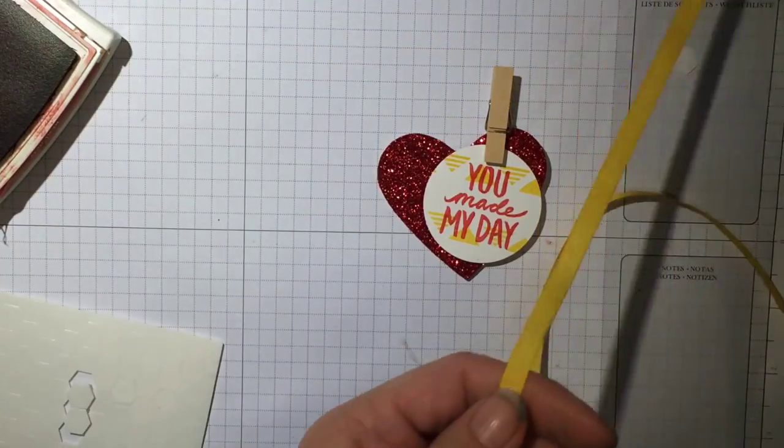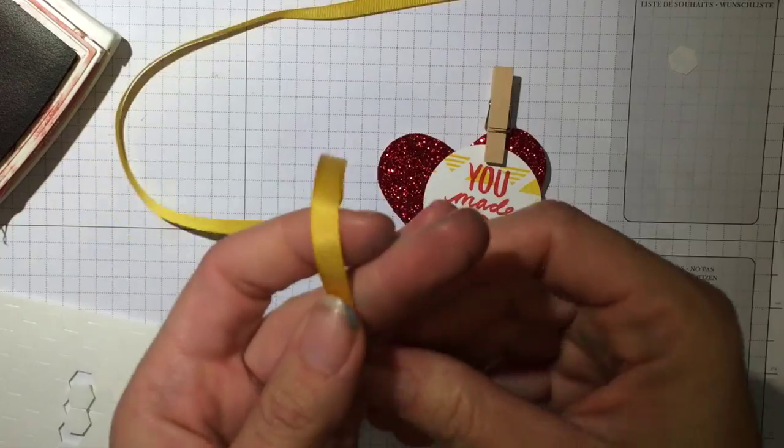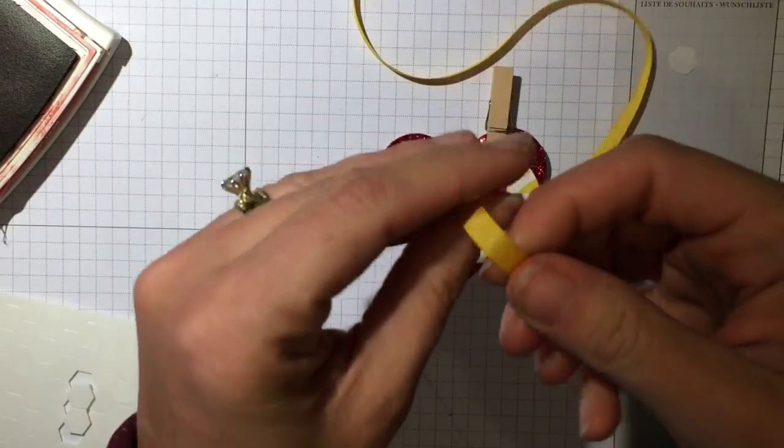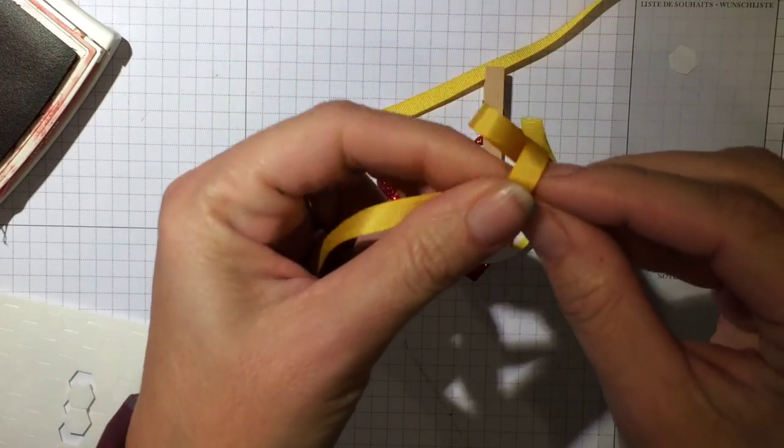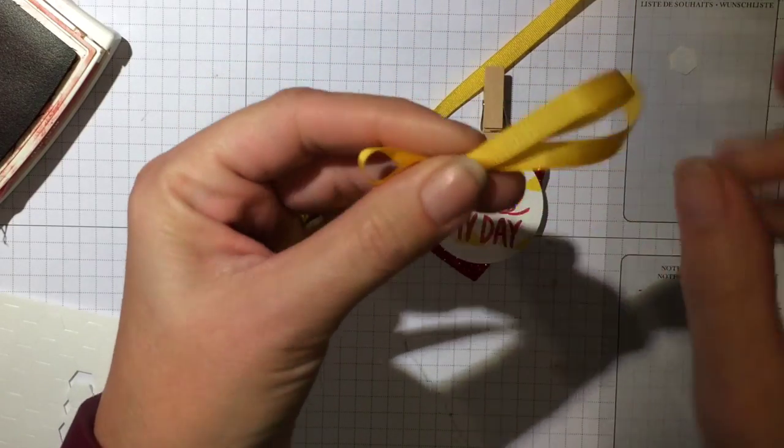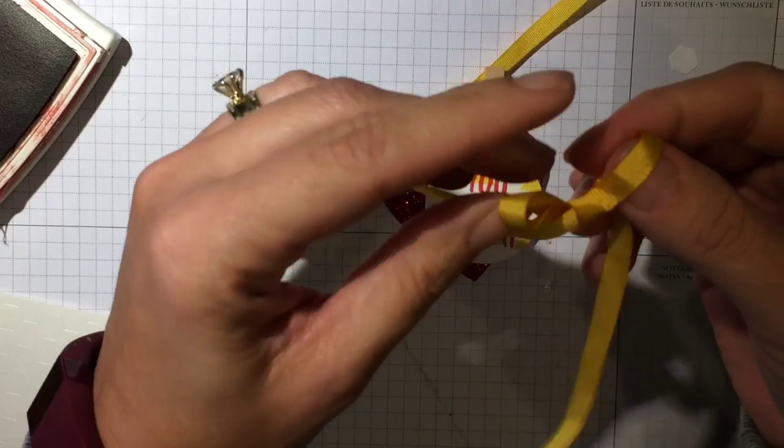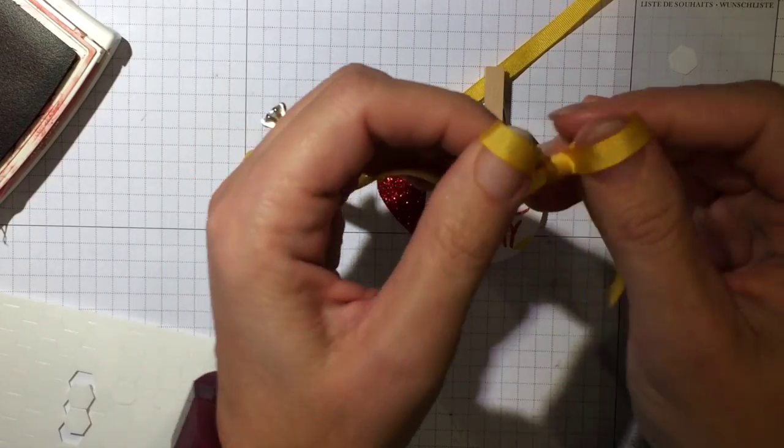Now I'm going to take some of this Hello Honey ribbon. That is another free choice in your celebration catalog. And I'm just going to tie a bow. I love this ribbon. It really does tie well. It's almost, almost feels like paper ribbon.